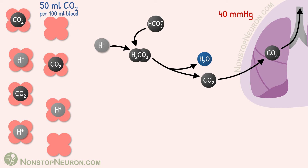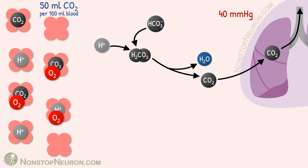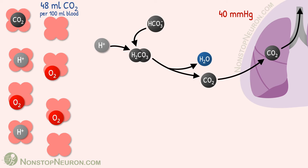Now we are ready to study the Haldane effect. The function of the lung is not only to remove carbon dioxide — it also brings in oxygen. In blood, oxygen binds with hemoglobin. This oxygen binding destabilizes hemoglobin, so more hydrogen and carbon dioxide is released on top of those released due to lower partial pressure. After this, carbon dioxide content of blood falls even further to 48 ml per deciliter blood. This increased release of carbon dioxide due to oxygen is called the Haldane effect. In a nutshell, the Haldane effect helps release more carbon dioxide at the same partial pressure of carbon dioxide.